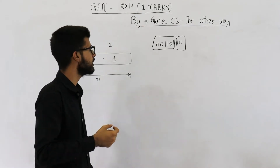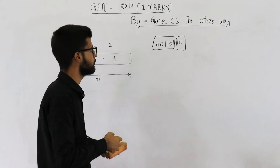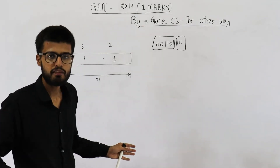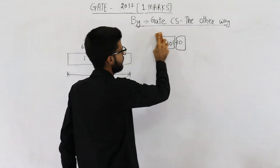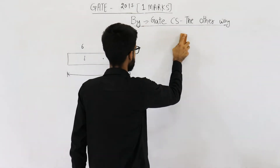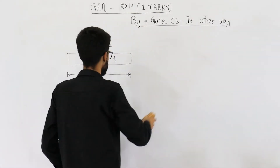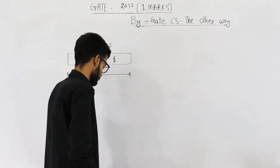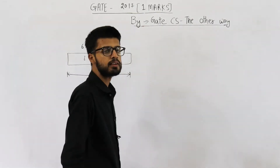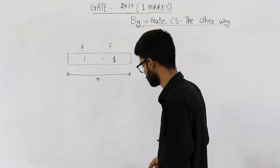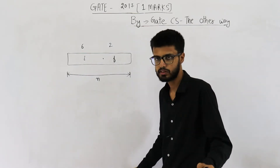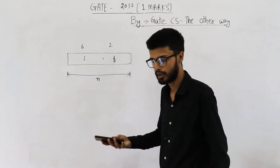Such number systems are easy to implement. We don't have to worry about the exponent, biasing, and all that. Now they are asking: what is the range of such a number system? Let's first read the question, then I will explain it.